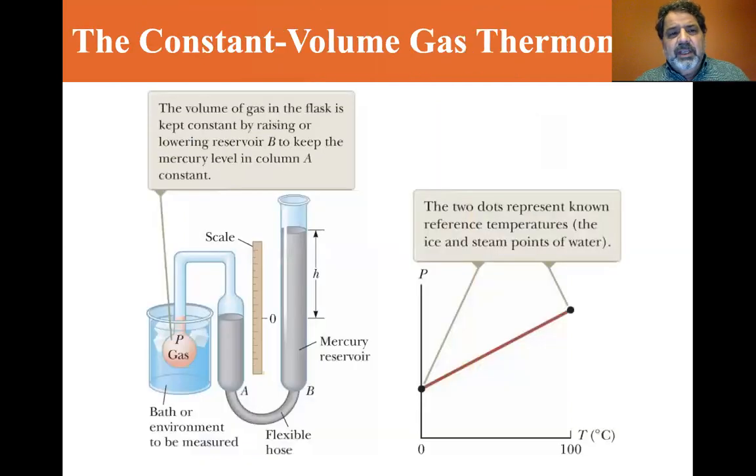So we can use a constant volume gas thermometer. And so, you have a volume of gas in a flask, and it's kept constant by raising or lowering the reservoir B to keep the mercury level in column A constant. So you can see there's the gas inserted into the bath, and you can see that there's a flask A and a flask B connected by a flexible hose. Well wait a minute, there's no pressure indicator. How do you get pressure?